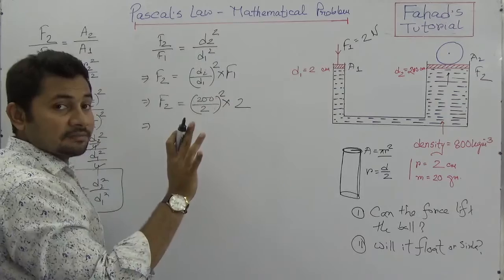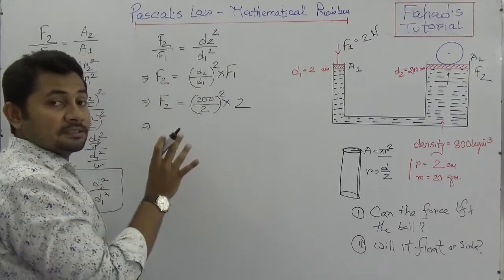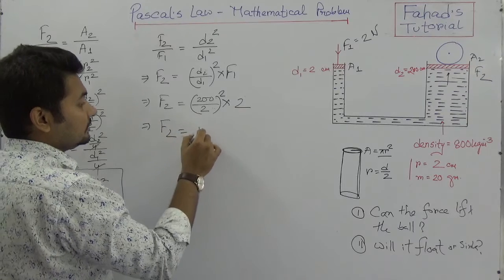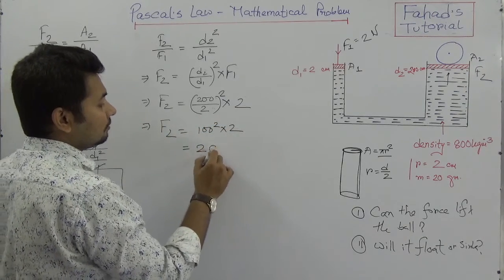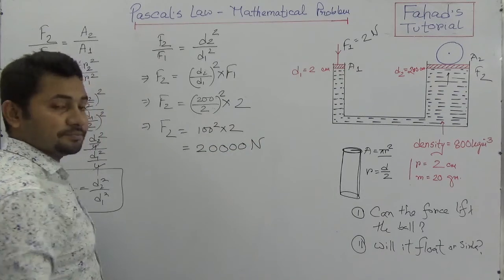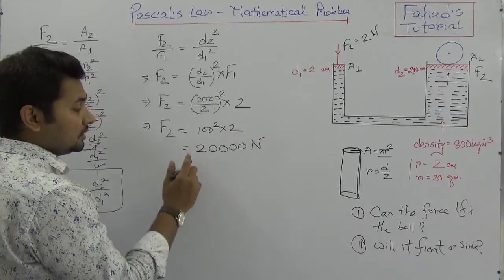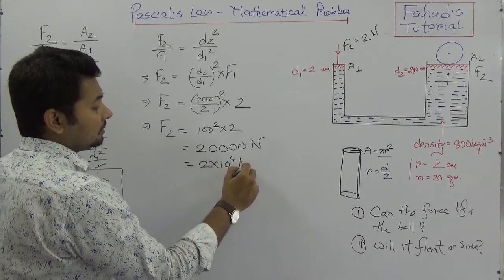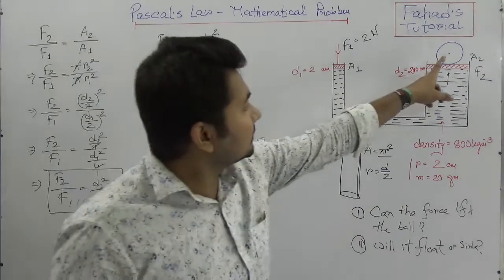If F1 is 2 newtons, then F2 = 100² × 2 = 10,000 × 2 = 20,000 newtons. Whatever data is given, if your concept and calculation are correct, the answer will work out. So F2 = 2 × 10⁴ newtons.